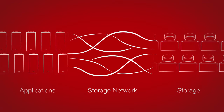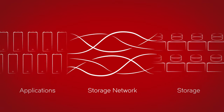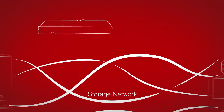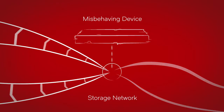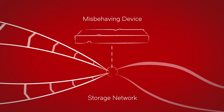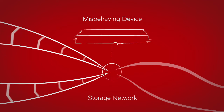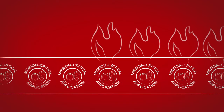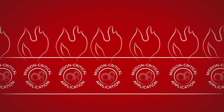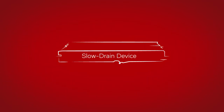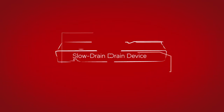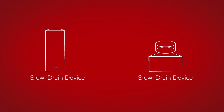With thousands of devices connected to a storage network, it's possible for just one misbehaving device to bottleneck the storage network and put multiple mission-critical applications at risk. This behavior, called slow-drain device, can be caused by any server or storage device.